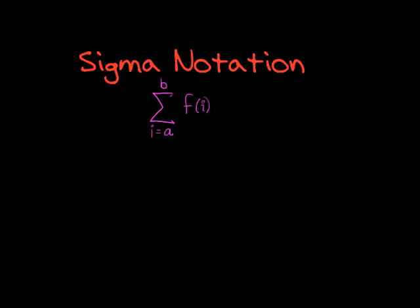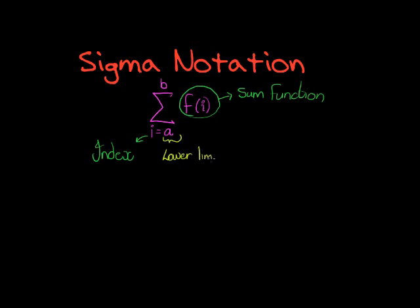In other words, we call that letter the index. So here is going to be some formula in terms of the index, and that's called the sum function. Now what is this number all about? That bottom number is the lower limit. It's the lowest value that the index will take.